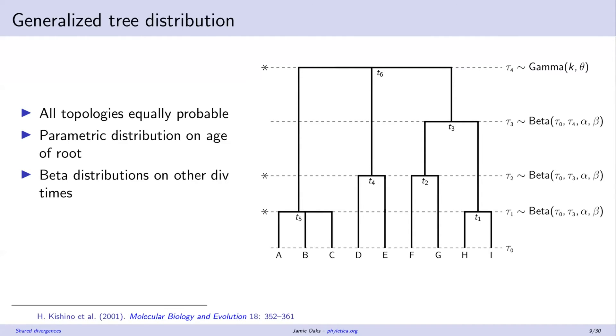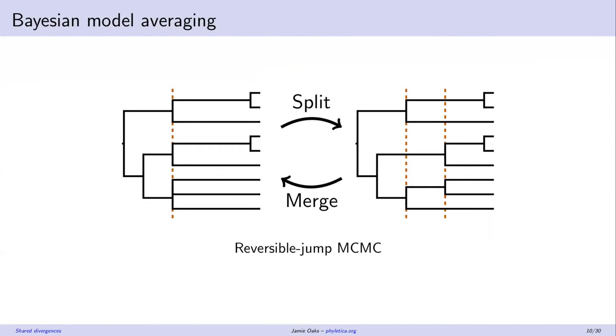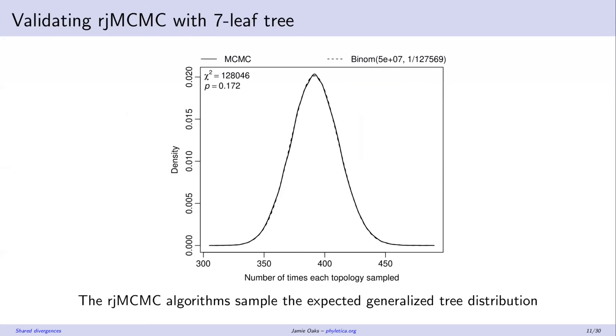Now we need a means of sampling that distribution. We're going to take a Bayesian approach to this. And since we're going to be sampling over models of different divergence times, we're going to use reversible jump Markov chain Monte Carlo. And so just very briefly, we need a way of being able to split up shared divergence times and multiplications and merge them back together. For the purposes of this talk, I'm just going to say it's magic. I'm not going to get into the details here, but I will show you that we did validate that our algorithms are sampling the space correctly.